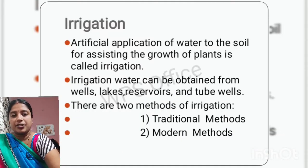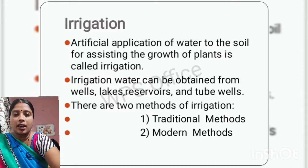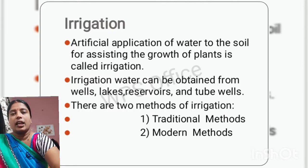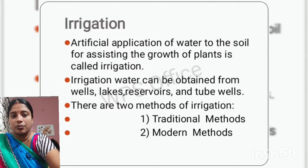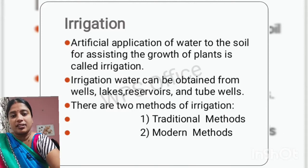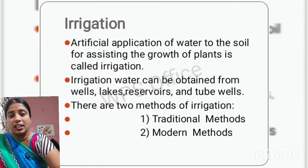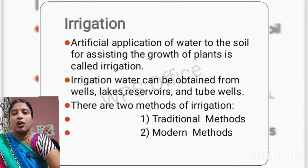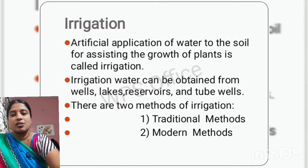Irrigation refers to the artificial application of water to crops for the growth of plants. When you have grown crops and in your area it doesn't rain properly, the crops may get spoiled, especially crops that require enough water. In that case, if it doesn't rain naturally, you have to provide artificial water to the crops. This method of artificial application of water to the soil for the growth of crops is known as irrigation.